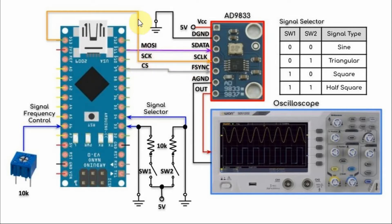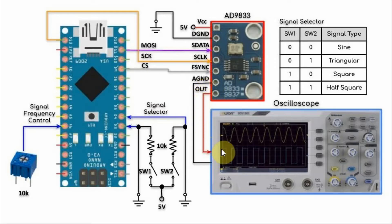The serial clock is connected to the clock pin of the Arduino, which is D13. The F-sync is connected to chip select, which is pin D9. We also have the analog output from the module connected to a scope.